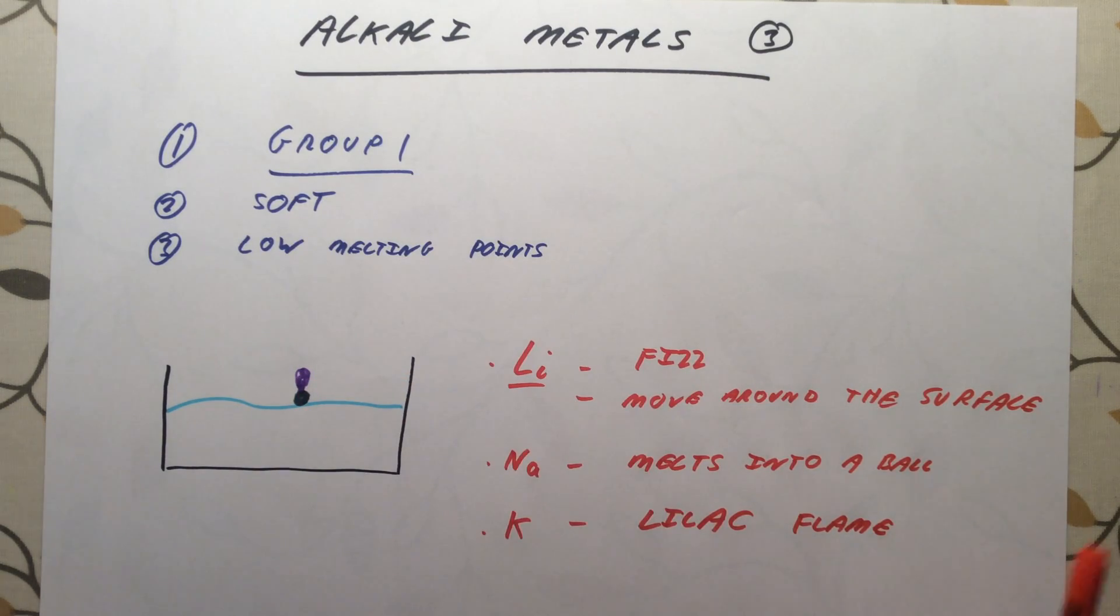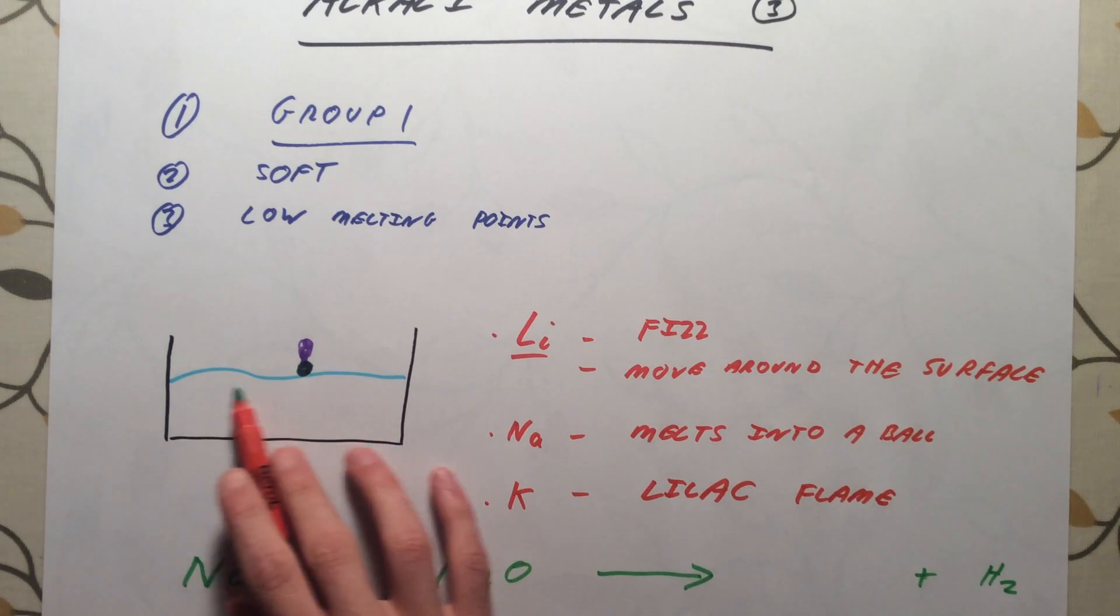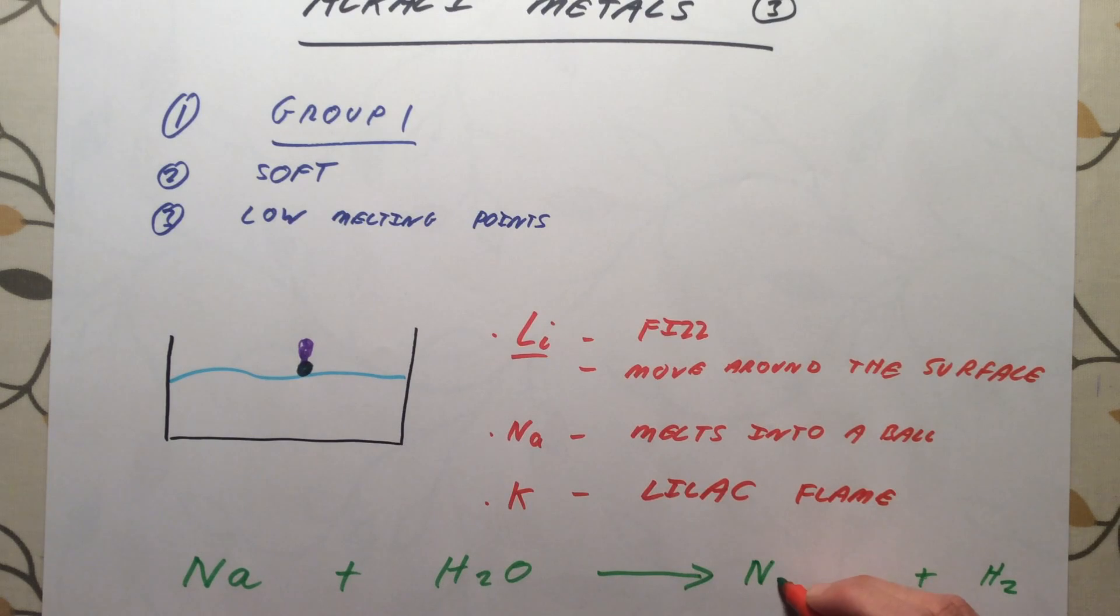Now, in all of these reactions, they follow a similar pattern in terms of their products. I'm just going to take sodium as one example. The metal we started with is just sodium. We are reacting it with water, H2O. In this reaction, every time, we're going to get hydrogen gas given off, H2. And the product that's produced, that is left over and dissolves in the solution, is always a metal hydroxide. In this case, it would be NaOH. But if you were to use lithium, it would be LiOH.